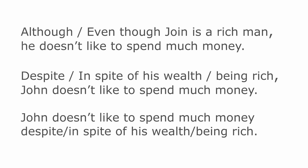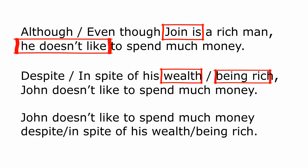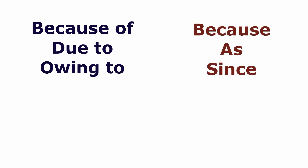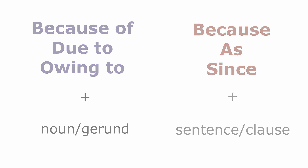For example: 'Although/Even though John is a rich man, he doesn't like to spend much money.' But if we use 'despite,' the structure changes. The same rule is applied for 'because of,' 'due to,' and 'owing to.' While their synonyms 'because,' 'as,' and 'since' are used with a full sentence, 'because of,' 'due to,' and 'owing to' are used with a noun or gerund. For example: 'Jane helped us because she is a kind person.' But: 'Because of her kindness, Jane helped us.'